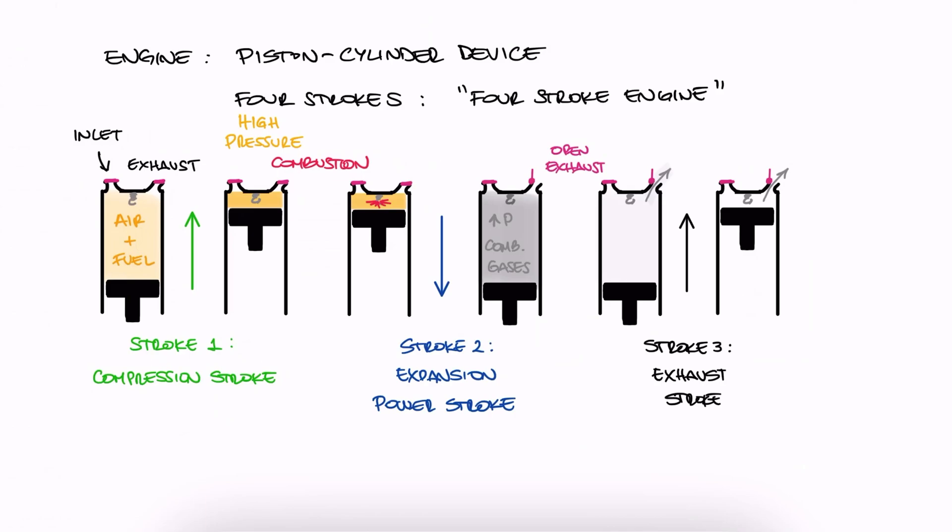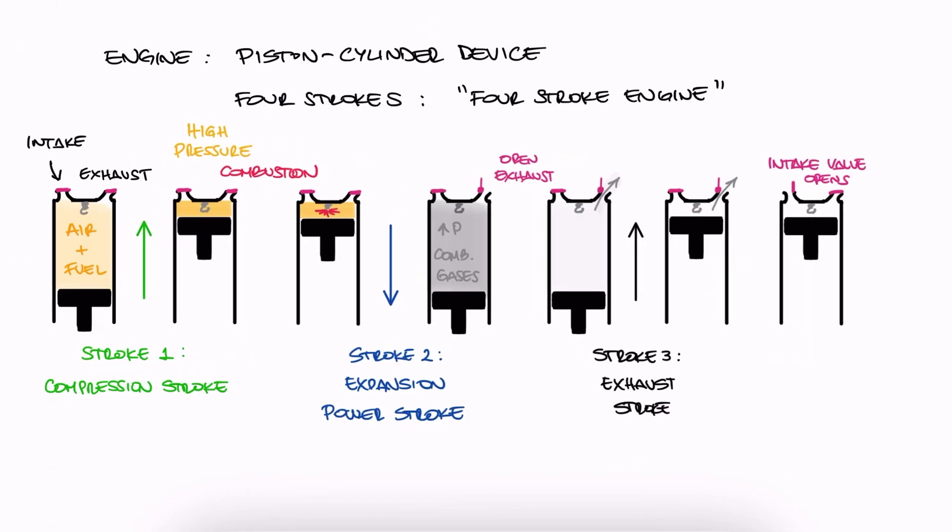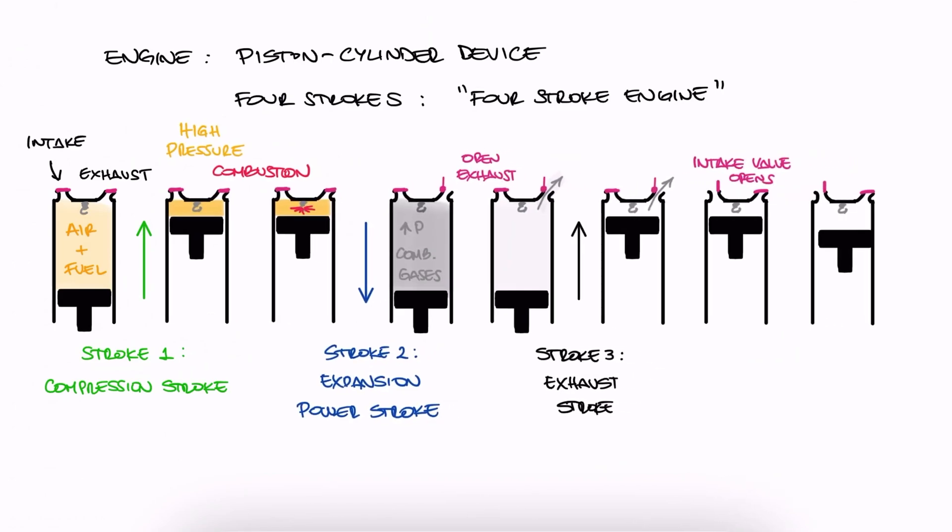After the exhaust gases leave the cylinder, the exhaust valve closes and the intake valve opens to let the air-fuel mixture come into the cylinder. As the piston moves down once again to its initial position, the fresh air-fuel mixture is pulled by the pressure being lower than atmospheric pressure. This is the fourth and last stroke. Once the air-fuel mixture is inside the cylinder, the valve closes and the cycle starts over.